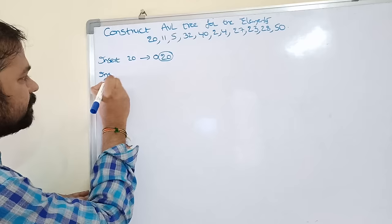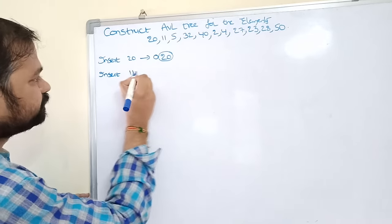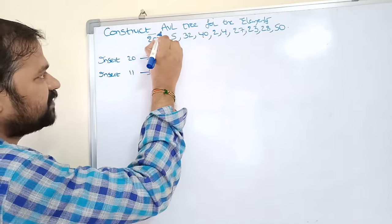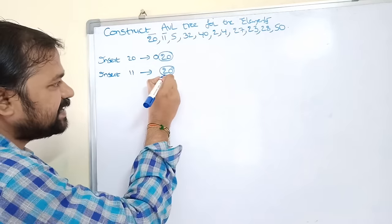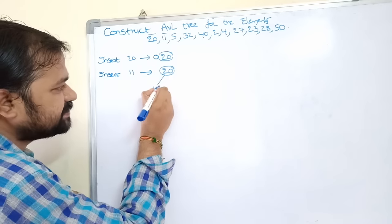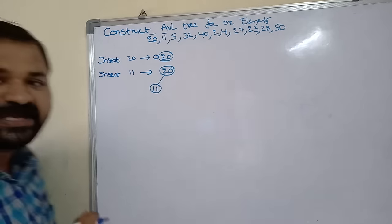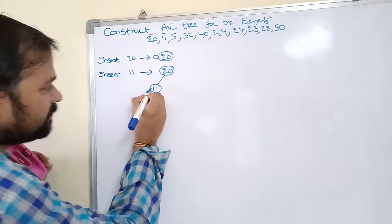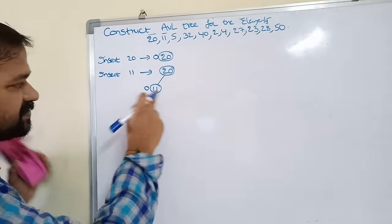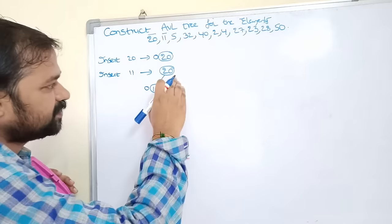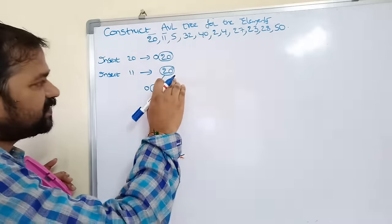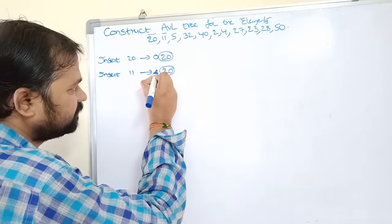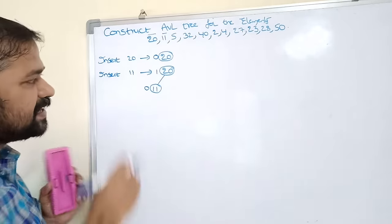Next let us insert 11. Compare 11 with 20 — 11 is less than 20, so 11 should be inserted as the left child of 20. Next we calculate balance factor from the leaf node onwards. The balance factor for 11 is 0 because there is no left subtree and no right subtree. The balance factor for 20 is 1 because height of the left subtree is 1 and there is no right subtree, so 1 minus 0 equals 1.